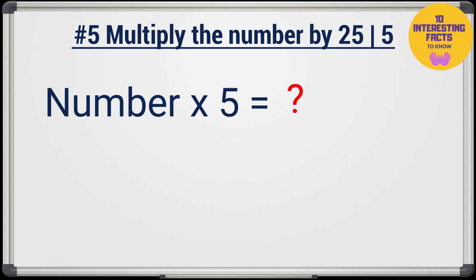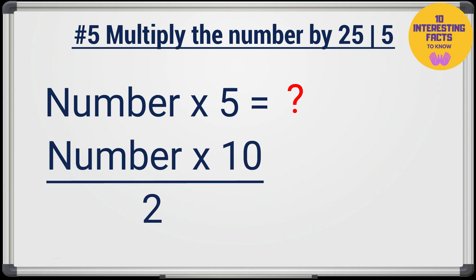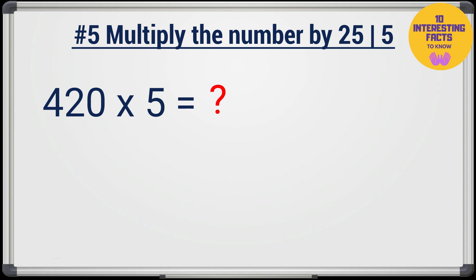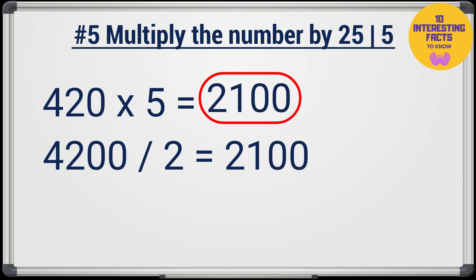Similarly, if you have to multiply by 5, just add a 0 at the end and then half it. 420 times 5 will be half of 4,200 which is 2,100. So that's the answer.